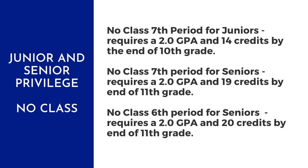Juniors and seniors who are on track to graduate can opt to have a period off in their schedule. Juniors may have one no class period, while seniors can choose one or two periods off. In order to have a no class 7th period, juniors must have a 2.0 GPA and at least 14 credits by the end of 10th grade. Seniors interested in a no class 7th period must have a 2.0 GPA and at least 19 credits by the end of 11th grade. For a no 6th period, seniors need a 2.0 GPA and at least 20 credits by the end of 11th grade.